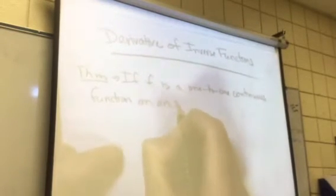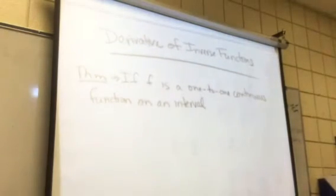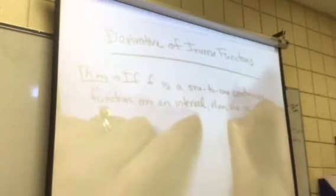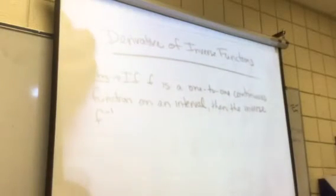On an interval - that just means I can restrict that domain. So how about half of a parabola? Is that a one-to-one continuous function? Yeah it is, but you're restricting the domain so that you're forcing it to be a one-to-one function. So if we have this, then the inverse, which we call f^(-1), is also continuous.